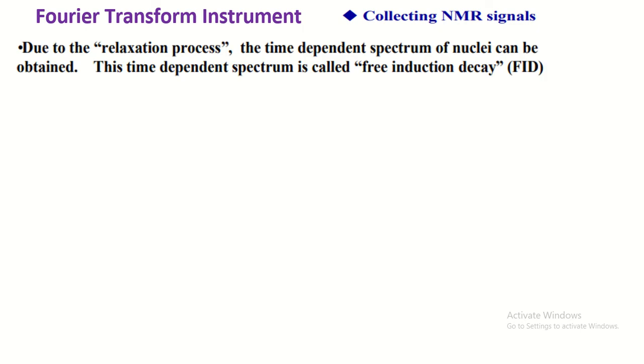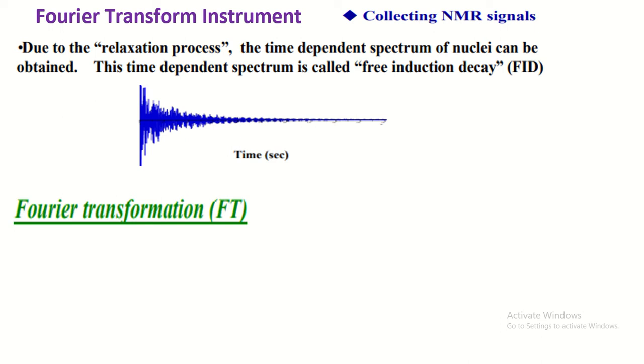measure the relaxation time. Then, plot the time domain spectrum. Such a spectra is also called free induction decay. And this free induction decay is converted into frequency domain spectra by Fourier transform instrument.